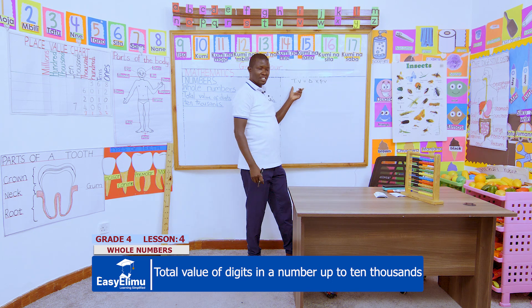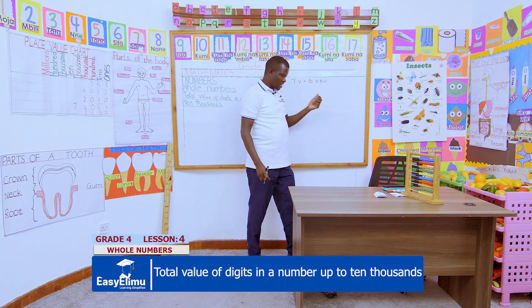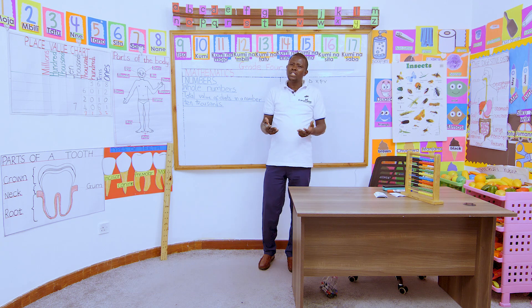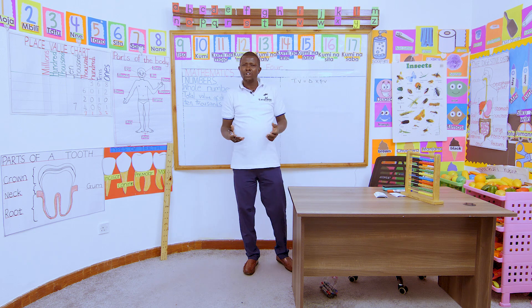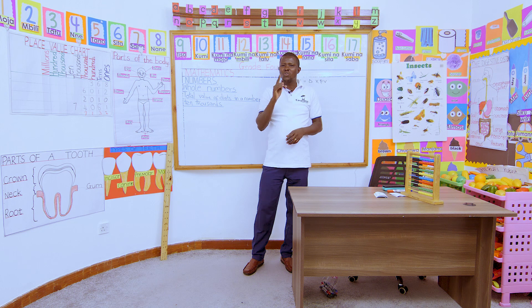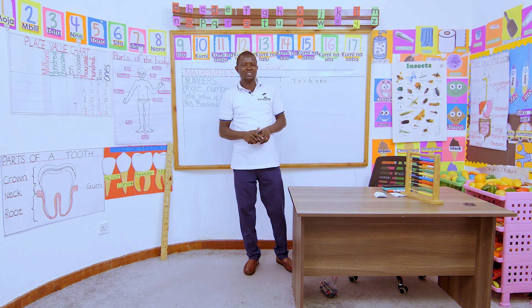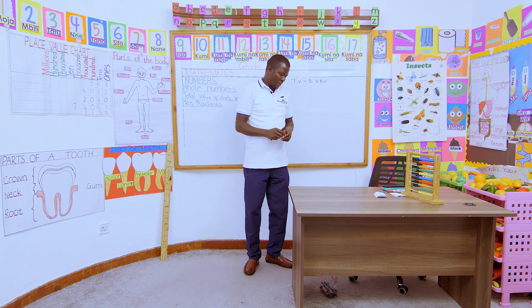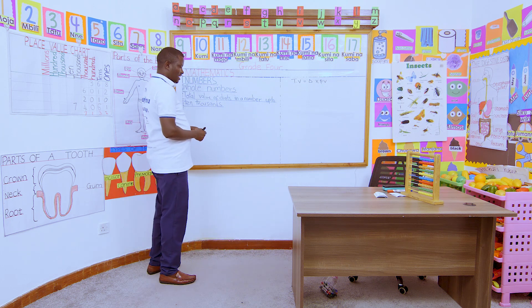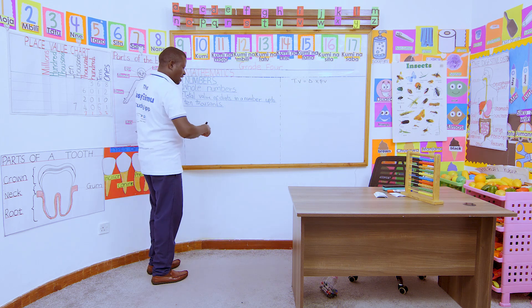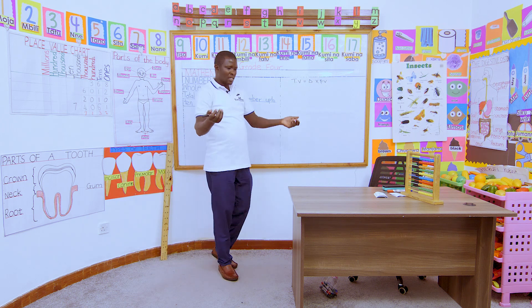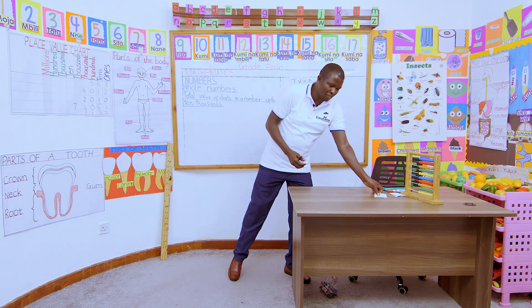Now my question is: how do we calculate the total value of digits in a number? In our groups currently, let us pick a number from the number cards that we have on our table.